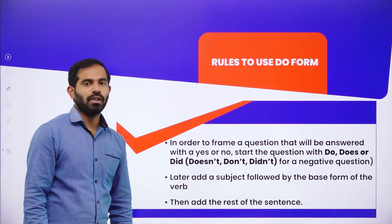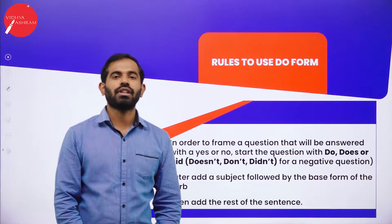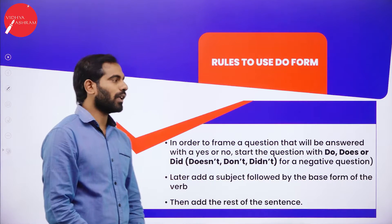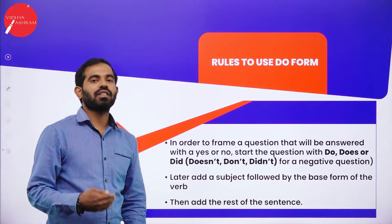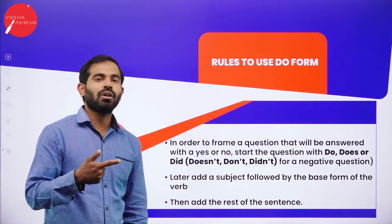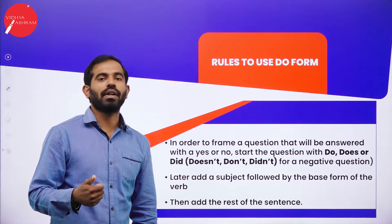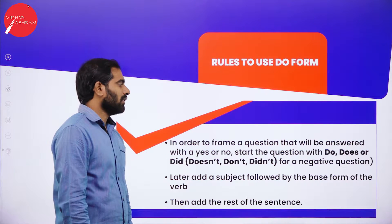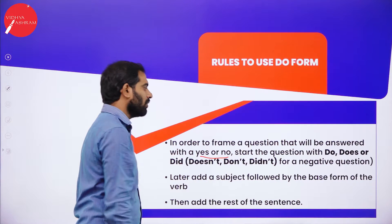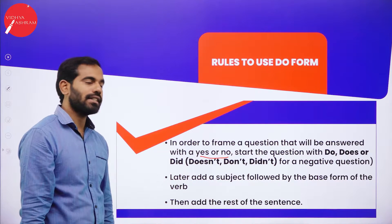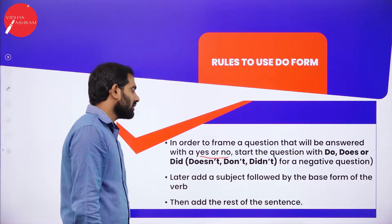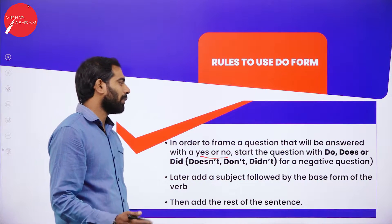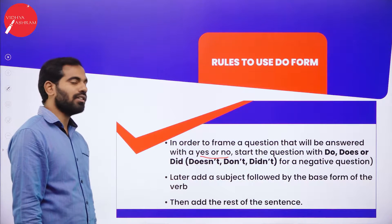Rules to use DO form. While framing questions, we usually frame questions using two aspects — DO or WH questions. Let us start with DO form. In my previous session, I had discussed about B forms and DO forms, and also Tenses. If you are thorough with Tenses and DO forms, this session will be very easy for you. In order to frame a question answered with YES or NO, start the question with DO, DOES, or DID if it is positive, and DOESN'T, DON'T, and DIDN'T for a negative question. Then add a subject followed by the base form of the verb and the rest of the sentence.